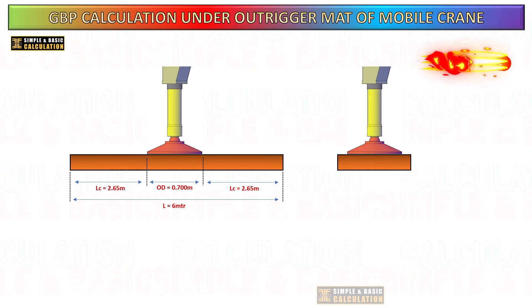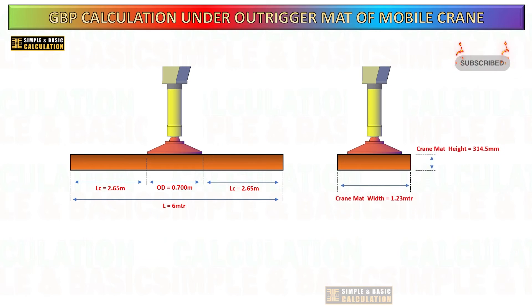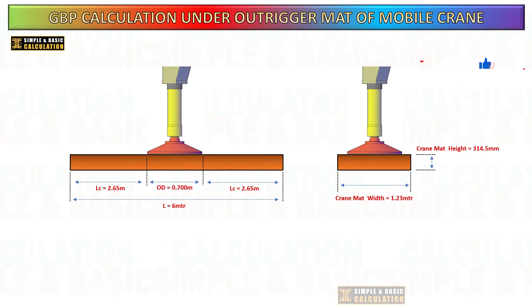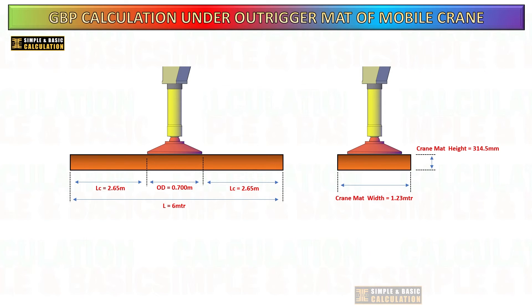The crane mat has a total length of 6 meters, a height of 314.5 millimeters, and a width of approximately 1.23 meters. The crane outrigger has a total diameter of 700 millimeters.